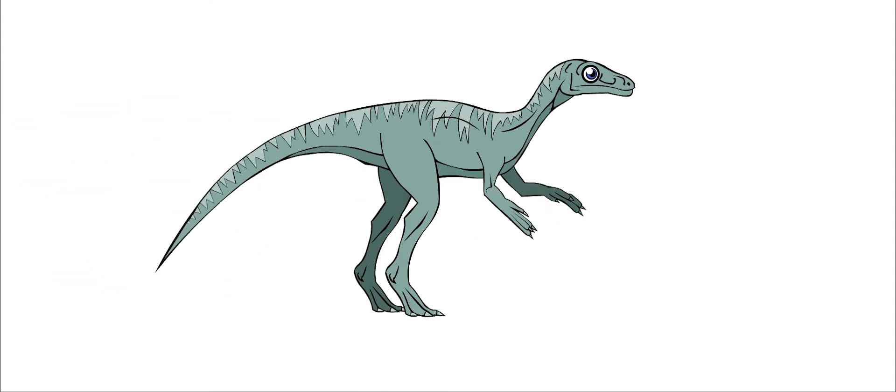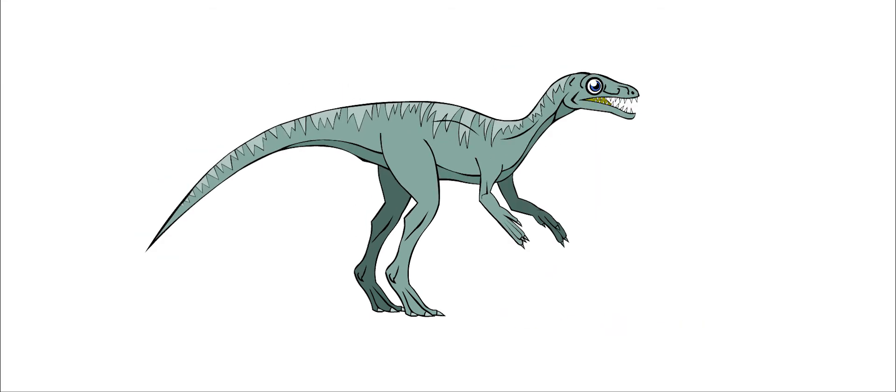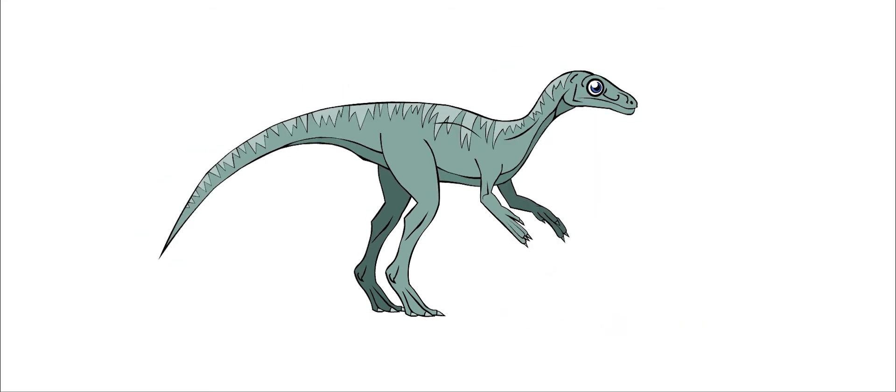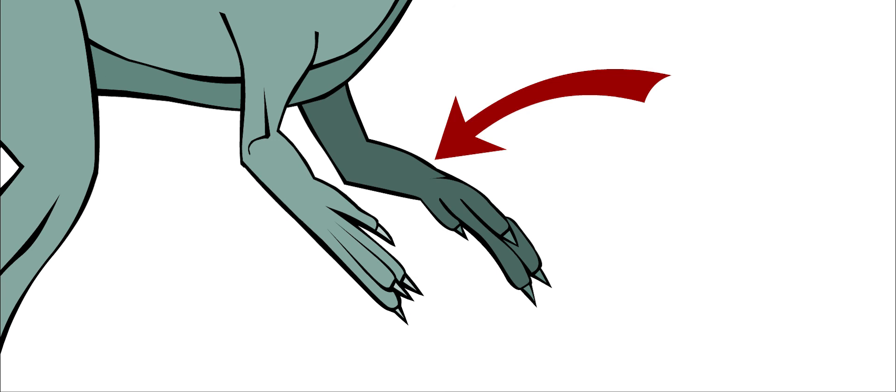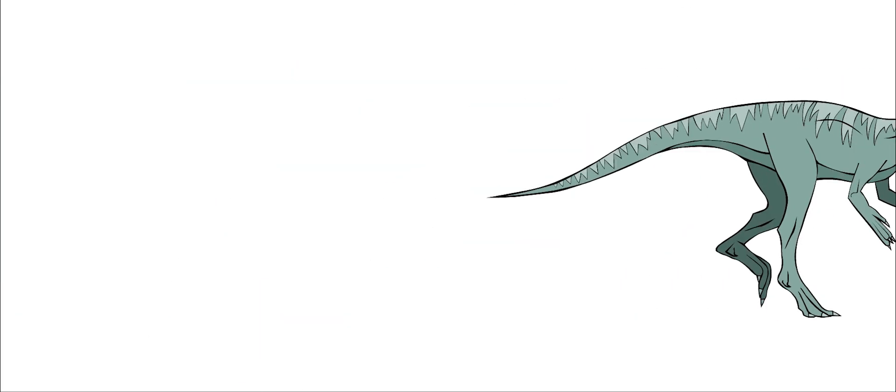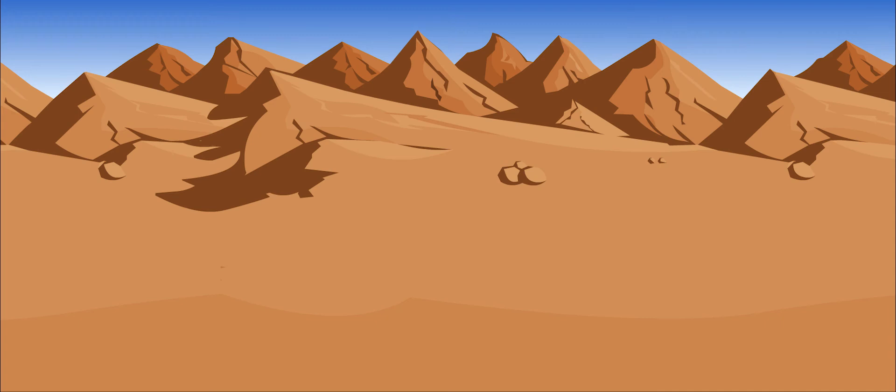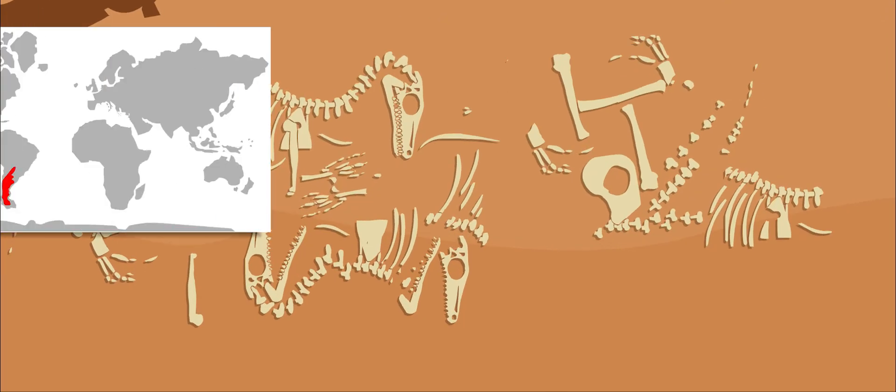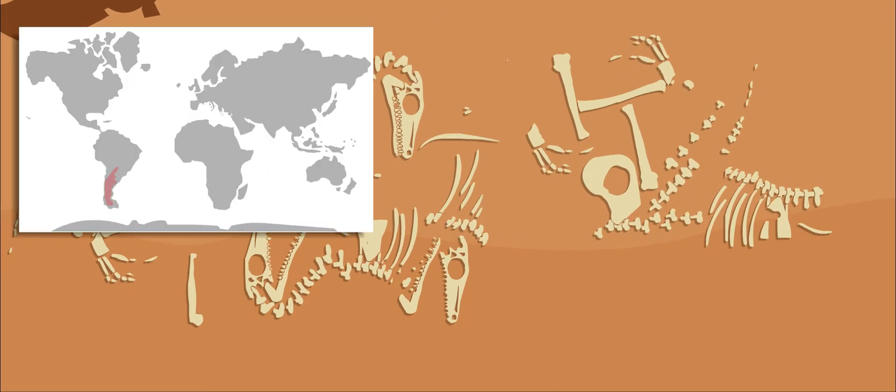Eoraptor had five fingers on its hands, like we do, so it could grab small creatures easily. But one of the fingers was so small that you probably couldn't even see it. The first bones of an Eoraptor were found in South America, in what is now the country of Argentina.